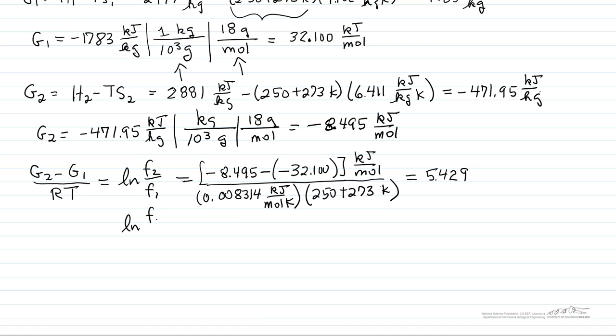And now I'm going to substitute log of fugacity 2. Fugacity 1 is the pressure because it's ideal gas at low pressure, 0.01 megapascals. That equals 5.429. If I take the exponent of both sides, I have 227.8. So fugacity 2 is 2.28 megapascals. It has to be the same units as fugacity 1.